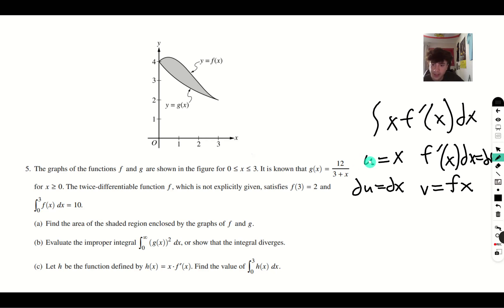So we get uv, which is x f of x, minus the integral of v du, which gives you f of x, the integral of f of x dx. And so we're evaluating from 0 to 3.